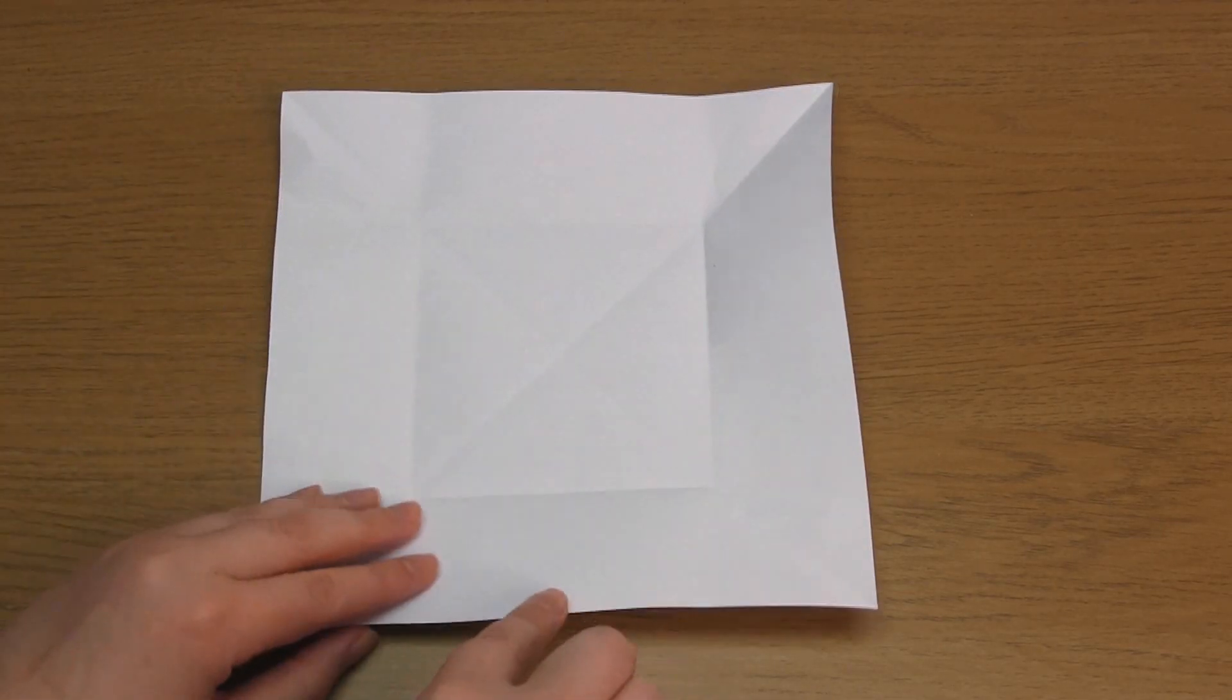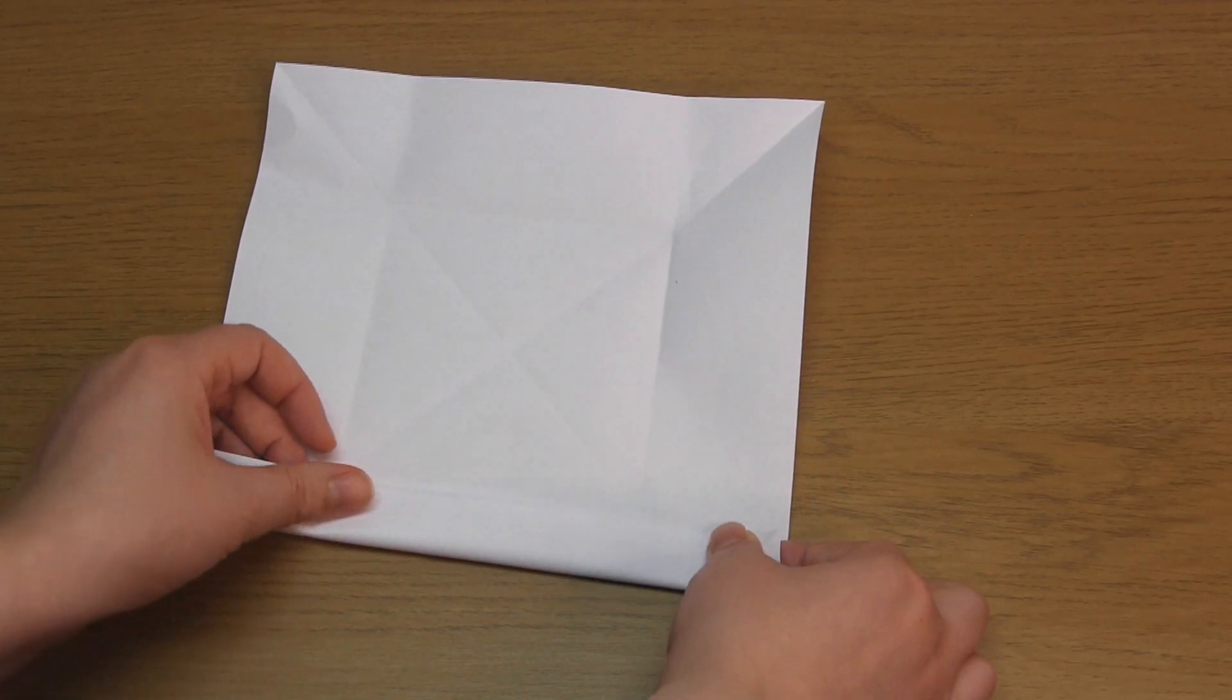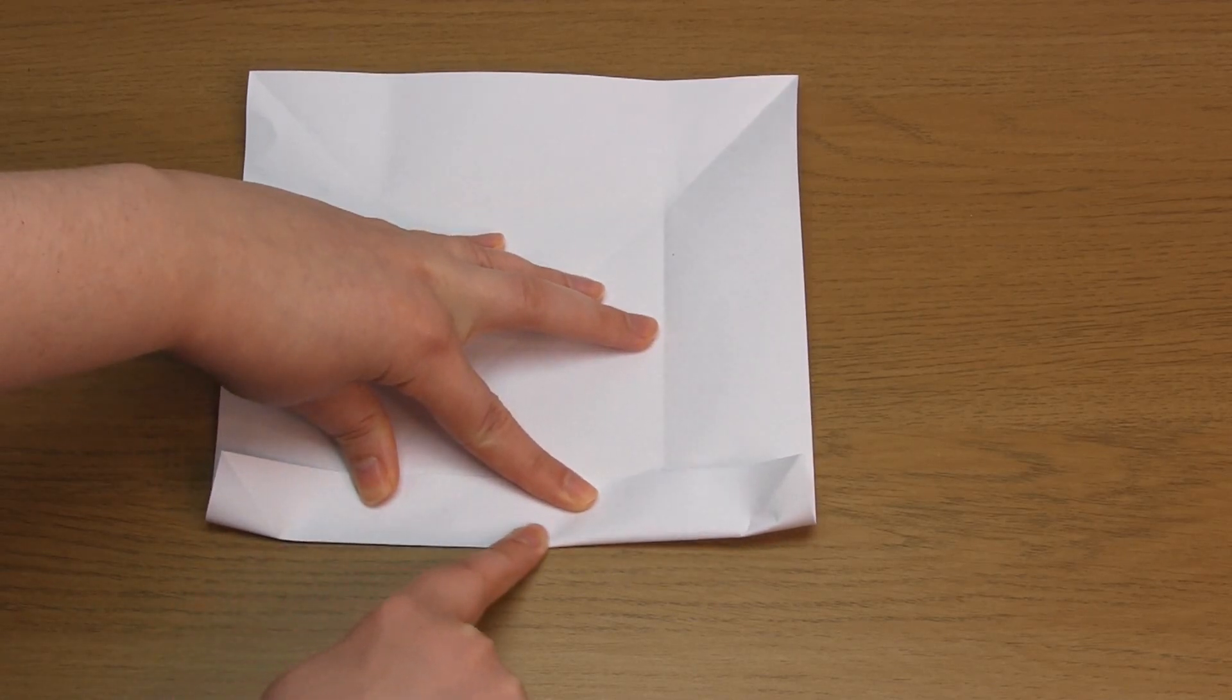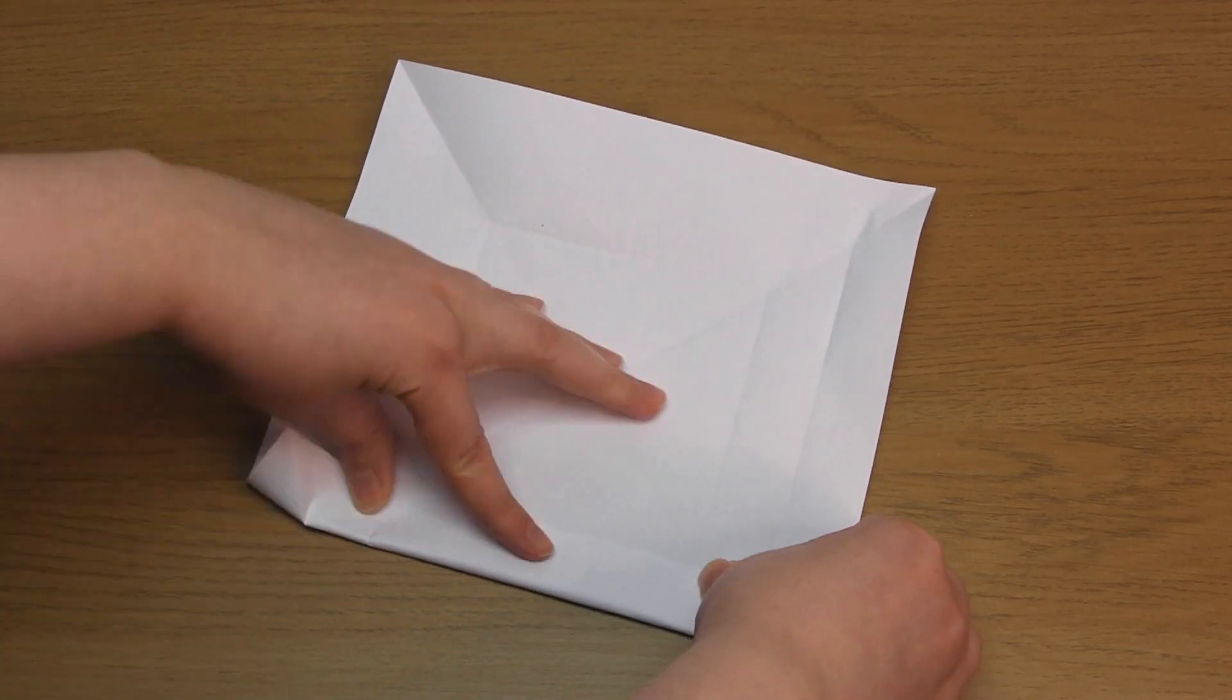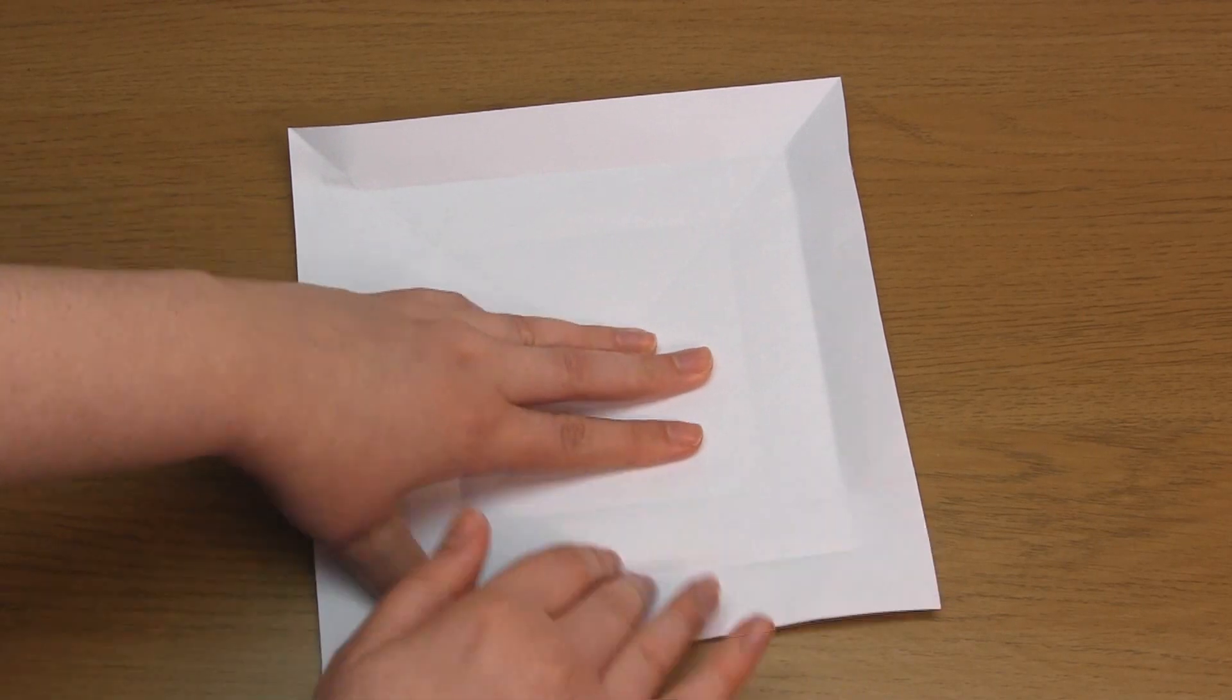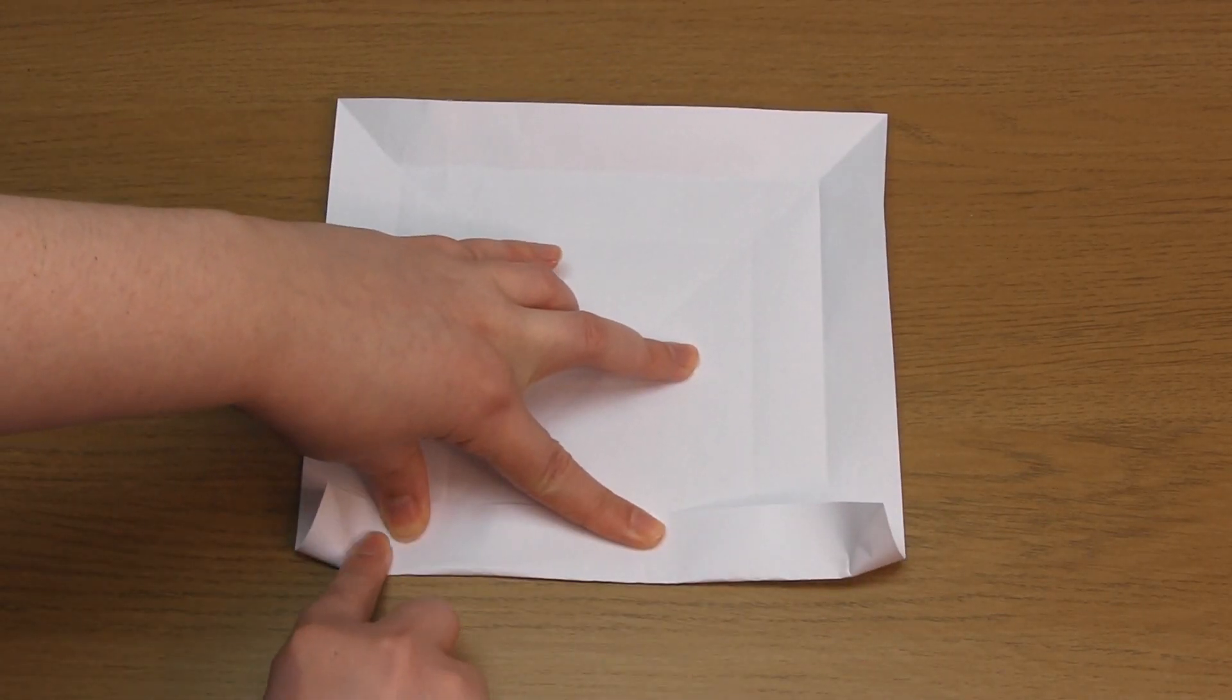Then you need to fold over the bottom edge again, but this time you line it up with the fold you've just made. Only crease the paper between the diagonal folds. Repeat this in every one of the triangle shapes. So fold over the bottom edge, lining it up with the fold you previously made. Each triangle should now contain two folds.